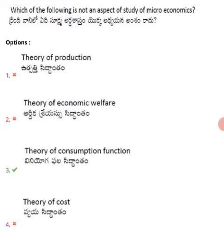Option three: theory of consumption function, which comes under macroeconomics, not microeconomics. Option four: theory of cost, which comes under microeconomics, not macroeconomics.